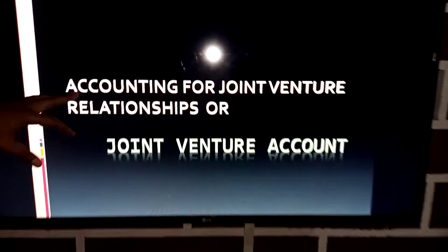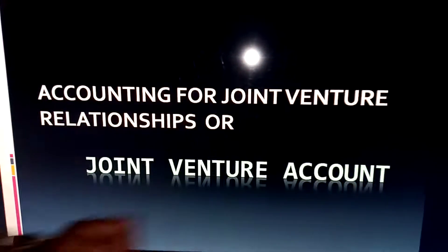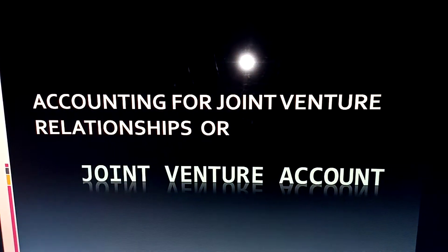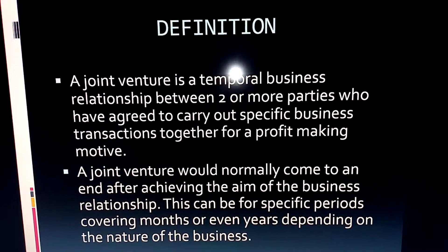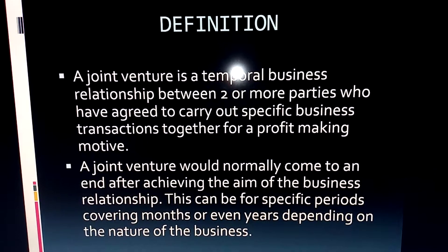Have you been involved in any business relationship with a friend or any person for a short or definite period of time, such that after the business there was a share of profit or loss? This type of arrangement is what we normally refer to as joint venture. This class will be taking us to Accounting for Joint Venture Relationships or Joint Venture Accounts. A joint venture is a temporary business relationship between two or more parties.